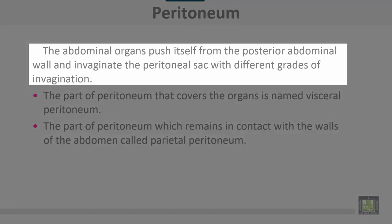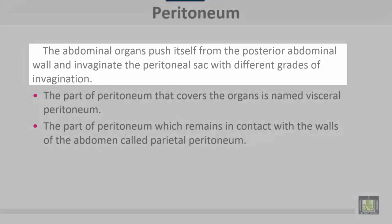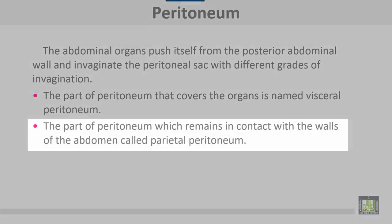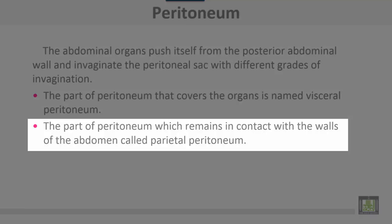Abdominal organs push from the posterior abdominal wall to invaginate the peritoneal sac with different grades of invagination. The part of peritoneum that covers the organs is called visceral peritoneum. The part of peritoneum which remains in contact with the posterior abdominal wall or abdominal walls all around is called parietal peritoneum.